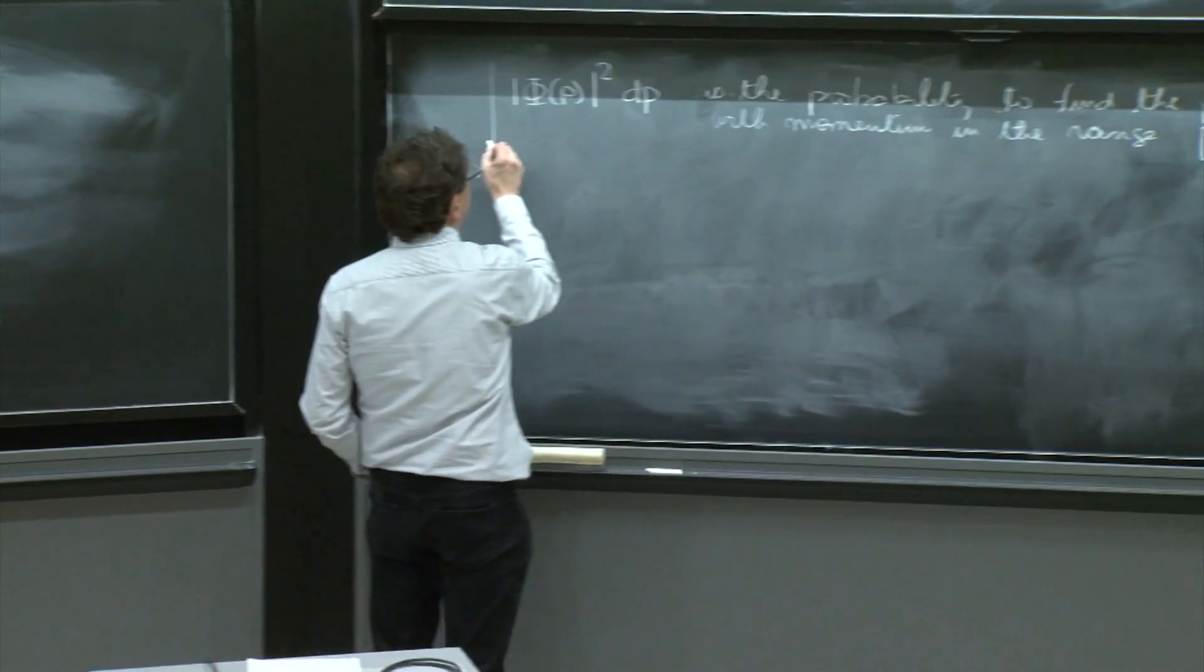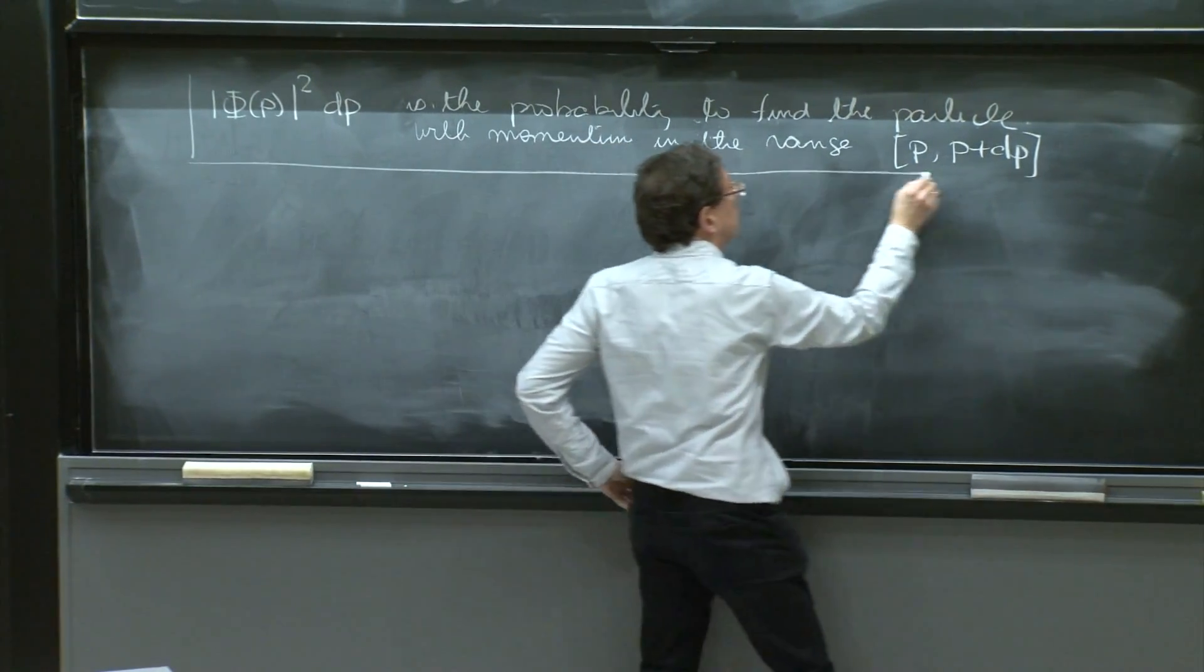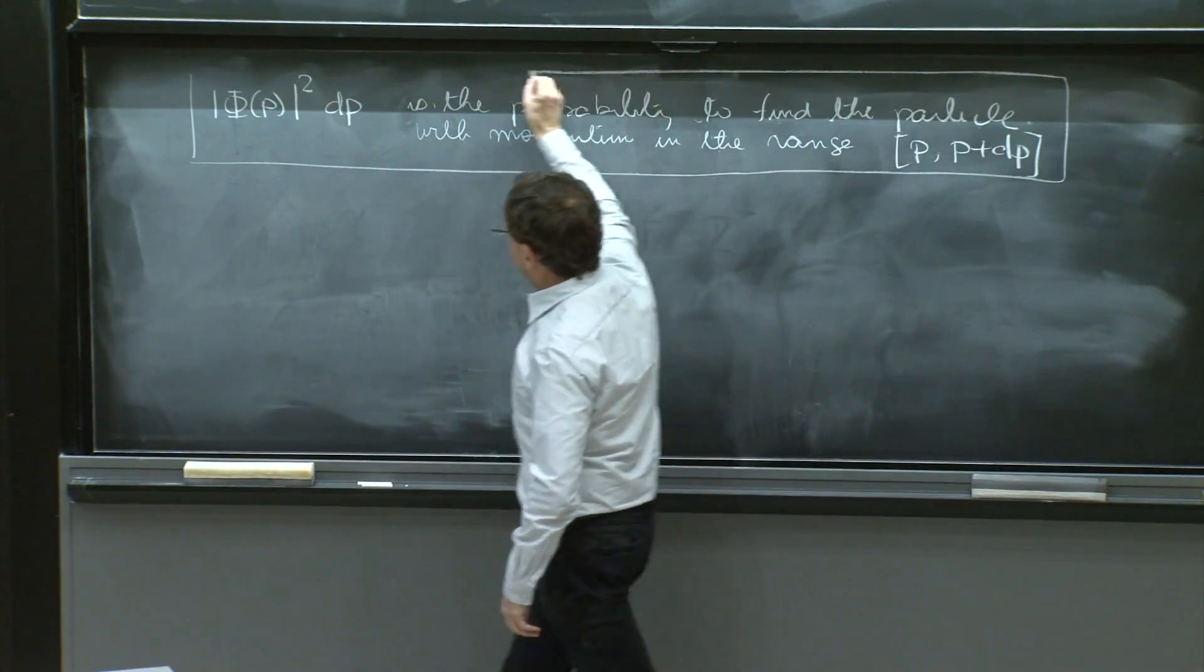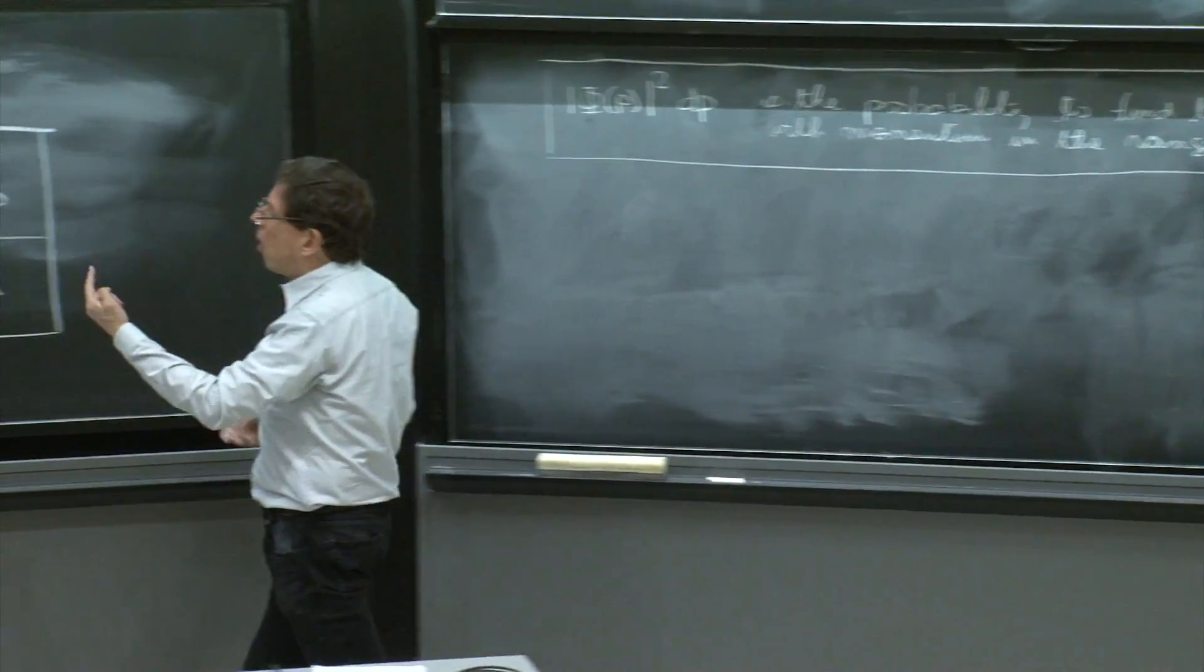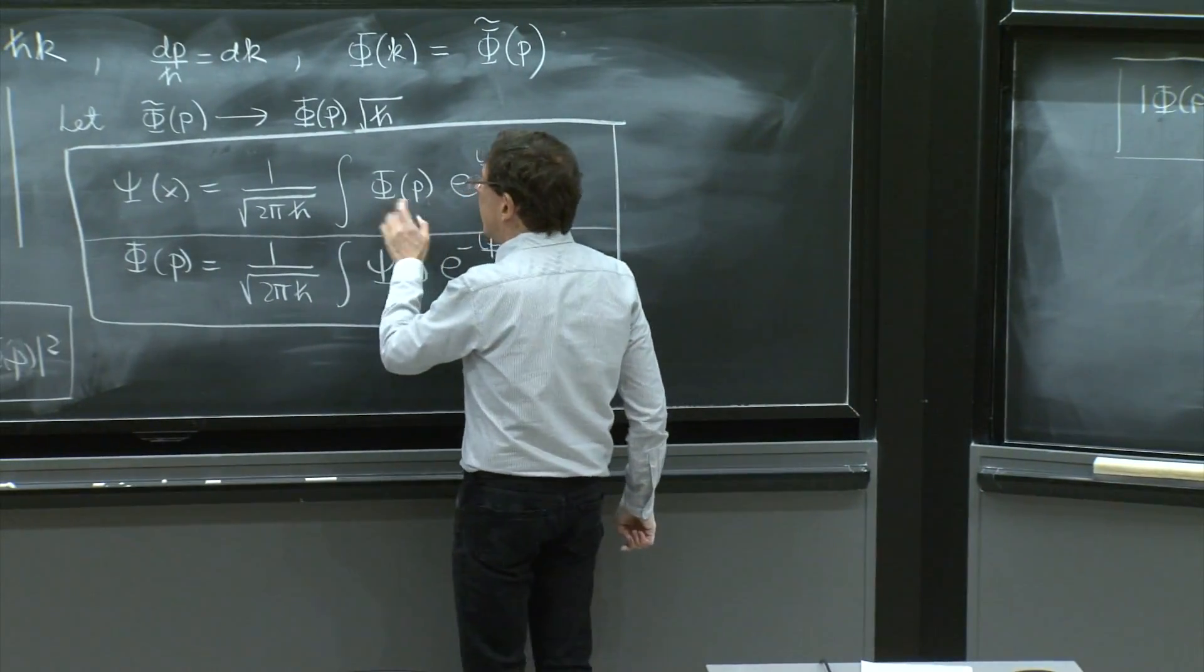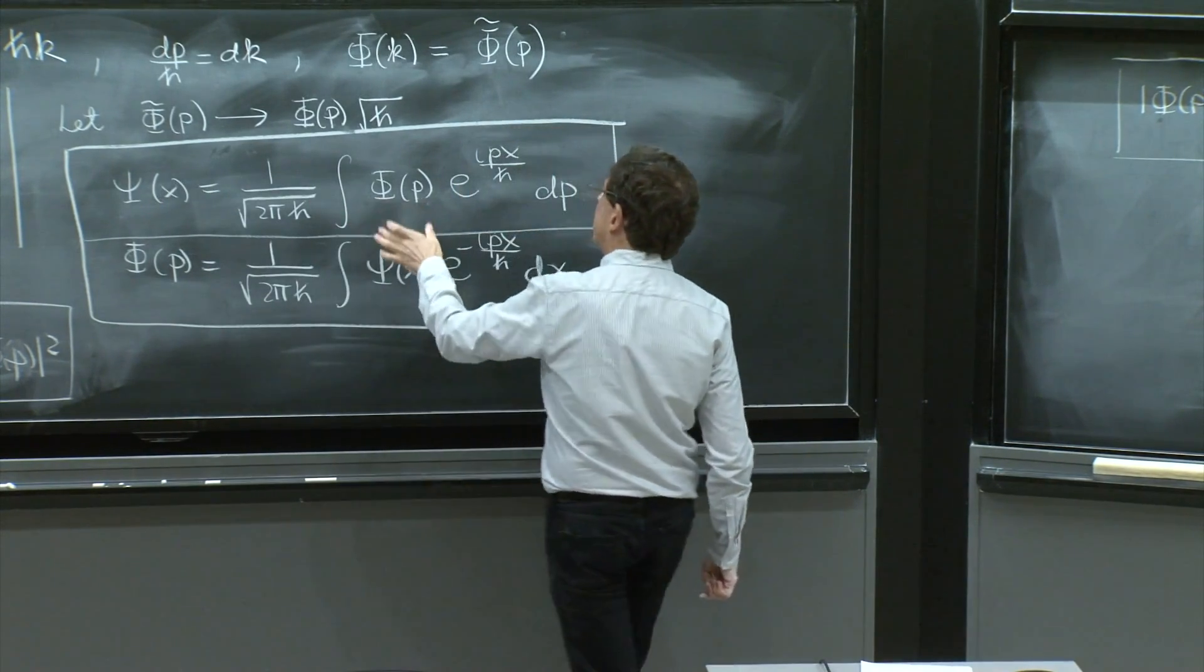And that's the way we finally promote this phi of x. So this is phi of p, which did encode psi of x. Phi of p has the same information as phi of x.